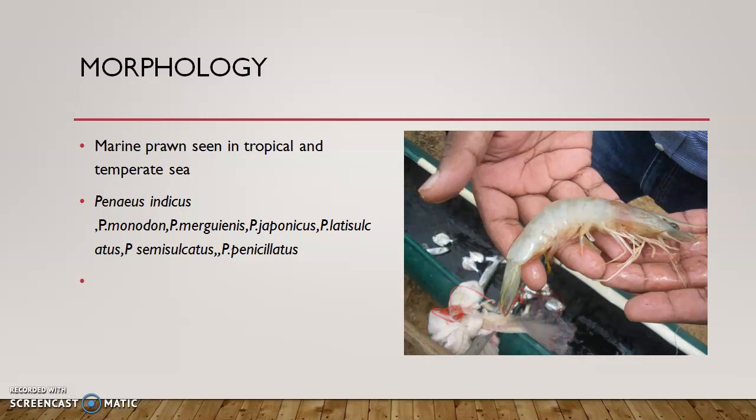You find such crustaceans in freshwater that are named as Palaemon. Penaeus is the common Indian prawn. In Indian waters, the common species of Penaeus include Penaeus indicus, which we are going to study in this topic. Other species include the giant prawn, that is Penaeus monodon, or it is also called the tiger prawn.